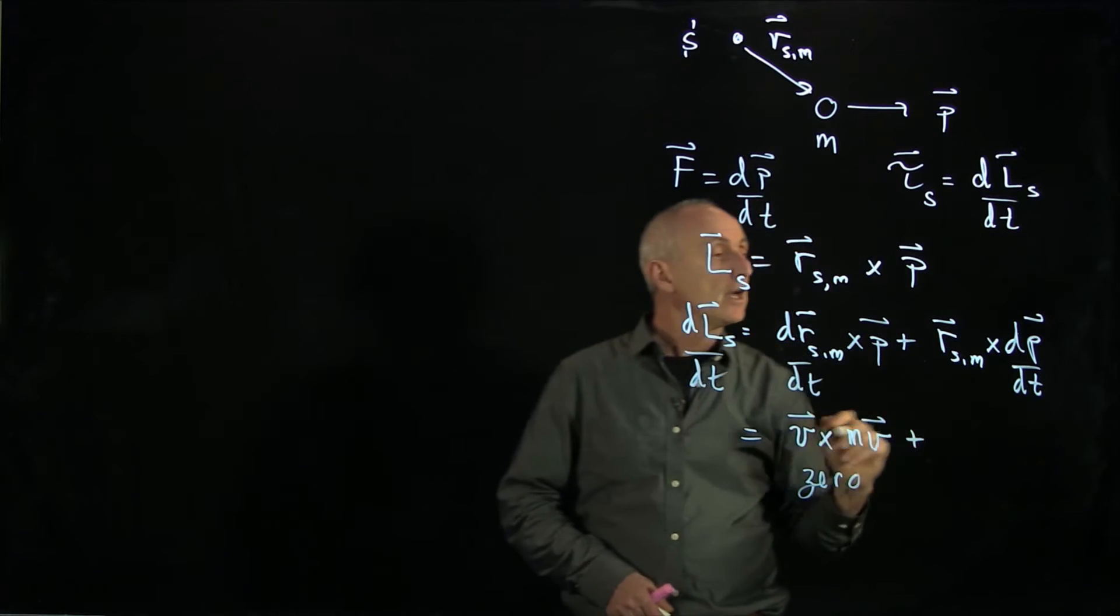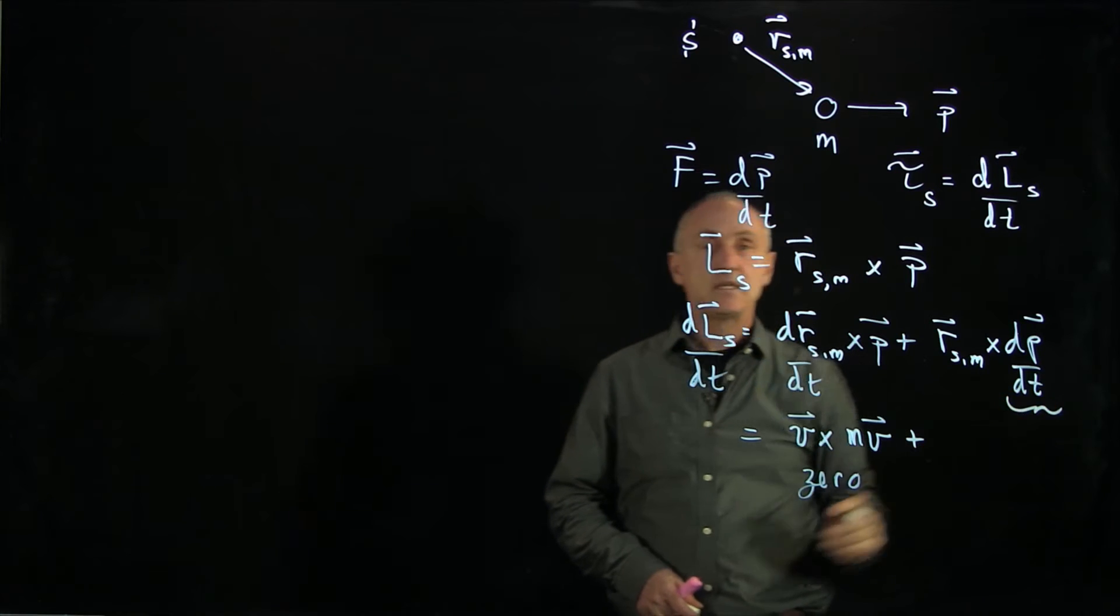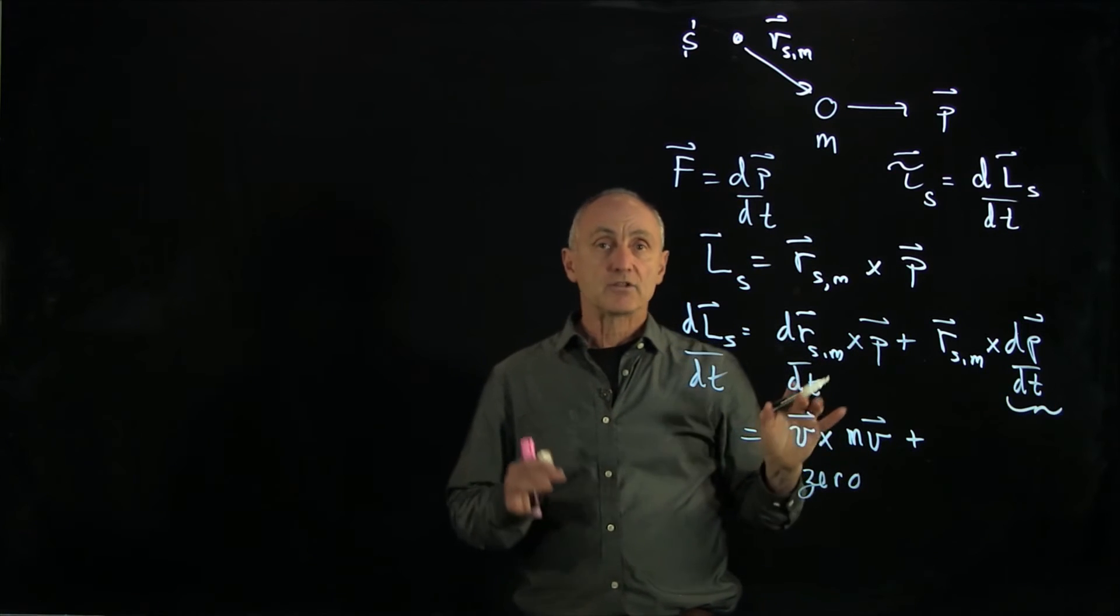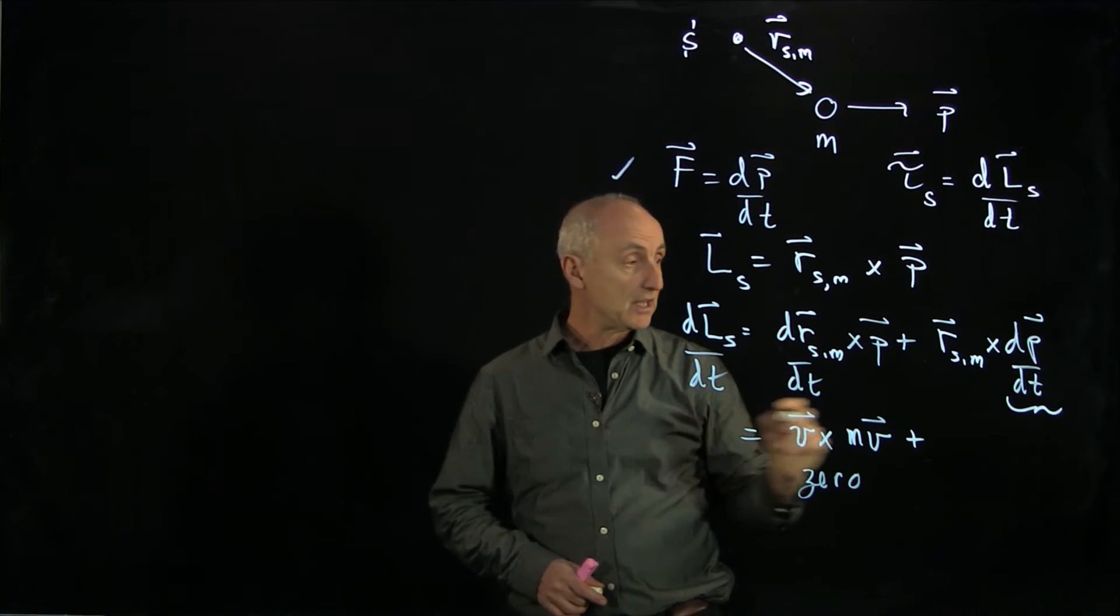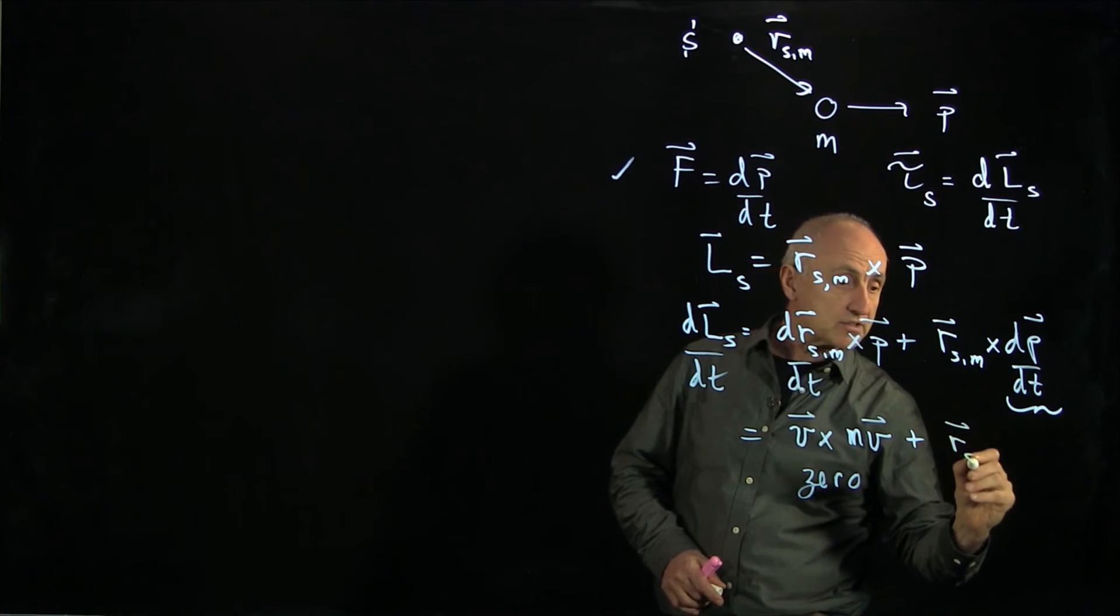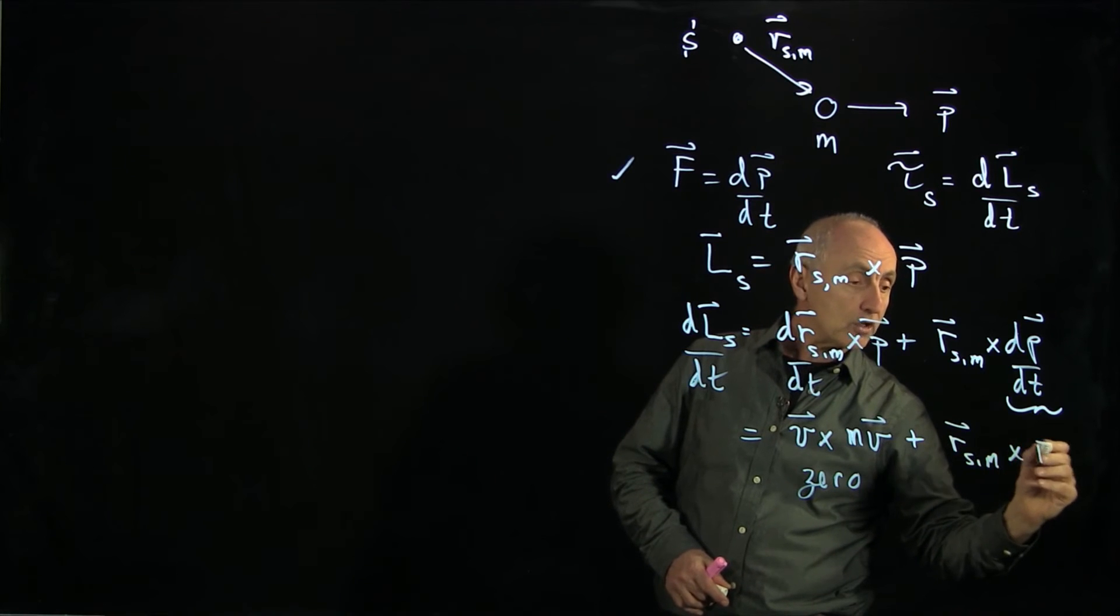And this second term, notice that we have dp dt in here. And it's always crucial to understand in these calculations where the second law comes in. And this is just rsm cross f.